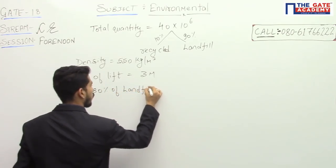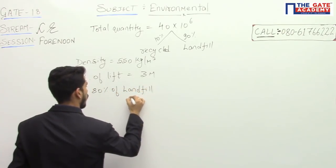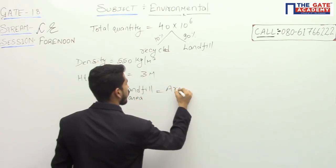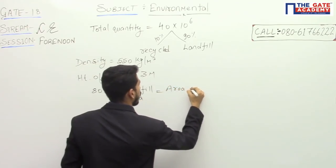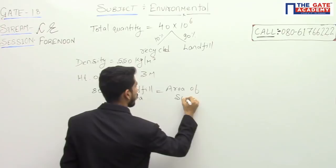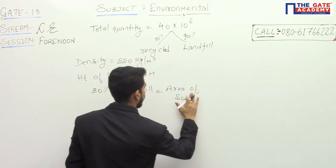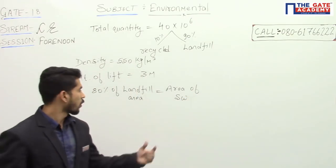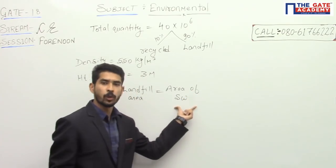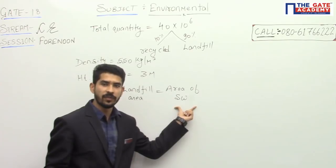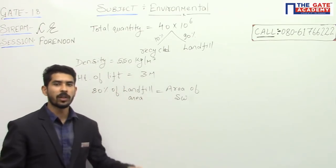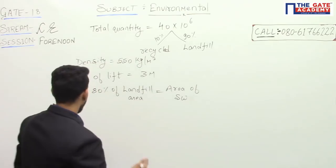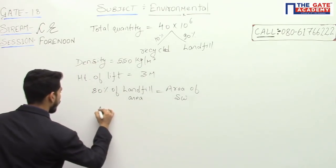80% of the landfill is occupied by MSW, meaning 80% of the landfill area is occupied by solid waste. So the area of solid waste occupying the landfill is 80% of the total landfill area, and we need to calculate the total area of the landfill.